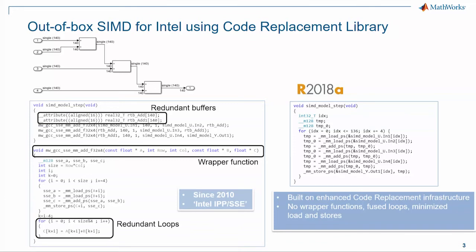So in 18A, the first thing we have done is to bring the SIMD intrinsics into IR, so that other optimizations can kick in — things like expression folding, while-loop fusion, and all sorts of optimizations. As a result, you can see on the right-hand side, this code is much closer to the code you would write manually. This is a very critical first step to achieve the 16 times speedup I mentioned in the previous slide. In summary: there's no wrapper function, the loops are fused, and the load-store operations are minimized.